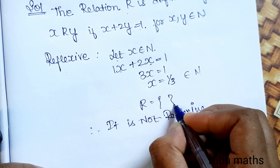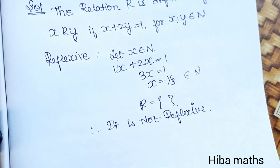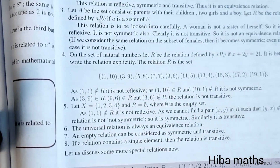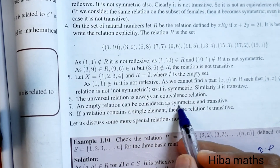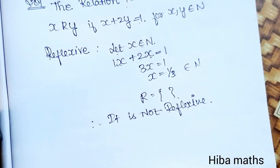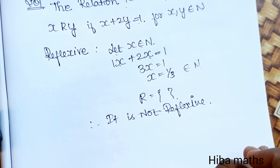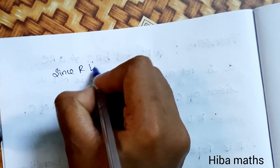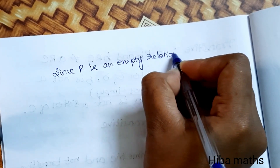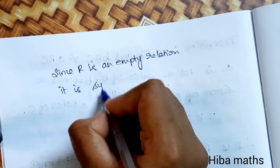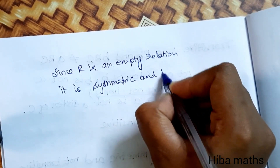When we consider symmetric and transitive: an empty relation can be considered as both symmetric and transitive. Since R is an empty relation, it is symmetric and transitive.